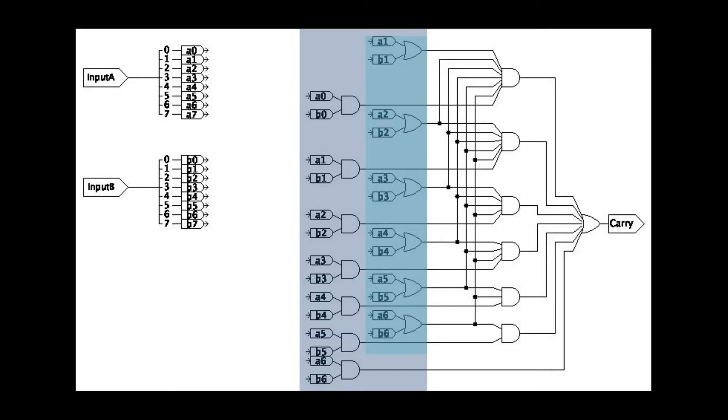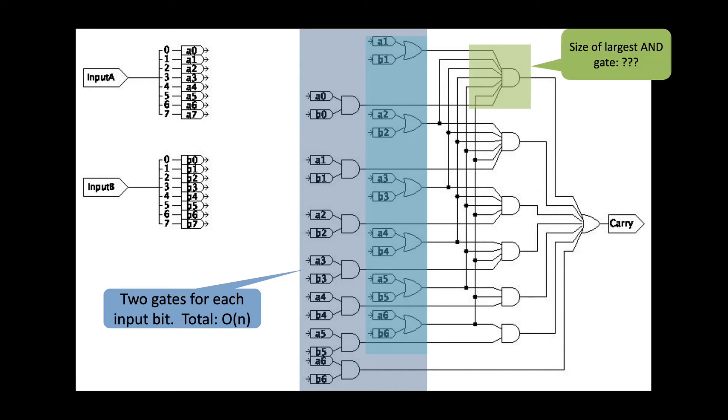First, there is one generate and one propagate gate for each bit of input. And this contributes a total of big O of N gates. The largest AND gate in the largest carry-in block has big O of N inputs. Video 14 shows us, then, that if we build this out of two input gates as a tree, its size is big O of N.